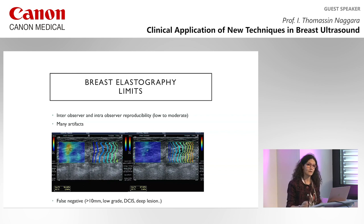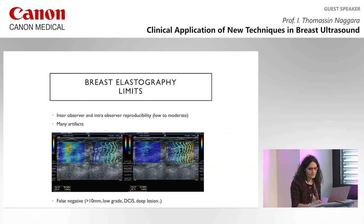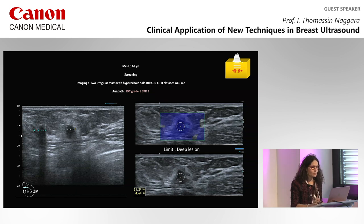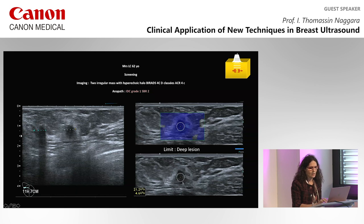Even with a ratio, there are false negatives. These are low-grade lesions with DCIS and also deep lesions. In this example there's no problem on B-mode — the lesion is a hypoechoic lesion with a halo, so the B-mode classification is typically suspicious — but when you apply elastography the coefficient is quite low, probably because it's a very deep lesion, and we know there are false negatives in this type of lesion.